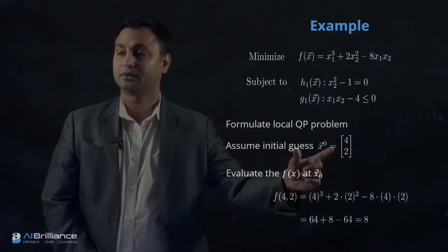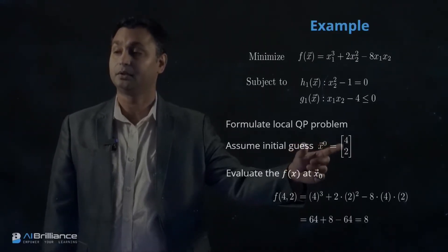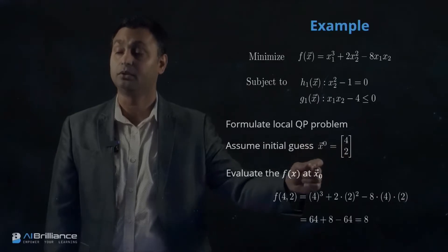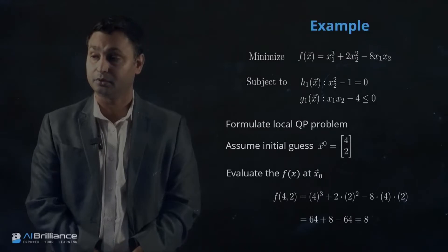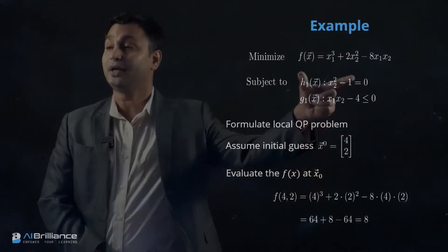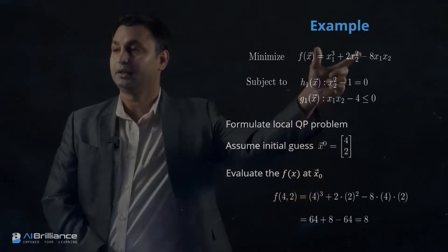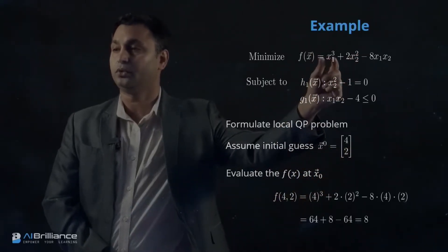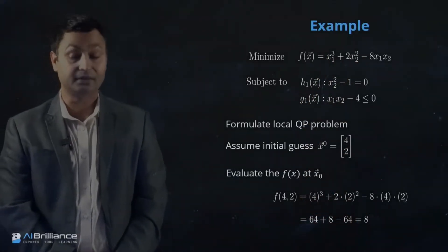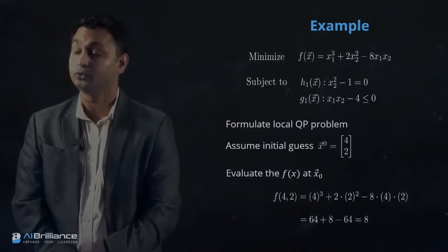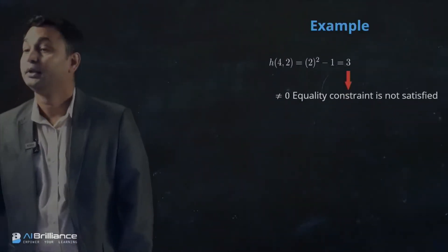Let's assume we are starting with some initial guess — the first thing we need in any optimization problem is an initial iteration. Let's assume x0 = (4, 2). Depending upon where we lie in our search space, we evaluate f(x0). By substituting x1=4 and x2=2, we simplify the equation and get f(4,2) = 8.